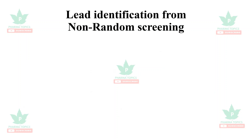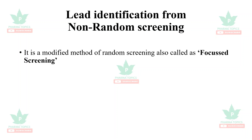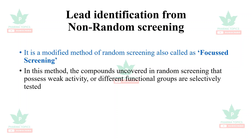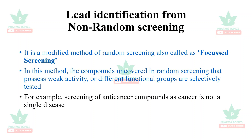Non-random screening is the opposite of random screening and is a modified, focused screening method. In this method, compounds uncovered in random screening that possess weak activity or different functional groups are selectively tested. For example, screening anti-cancer compounds against a particular set of cancer types is called non-random screening.